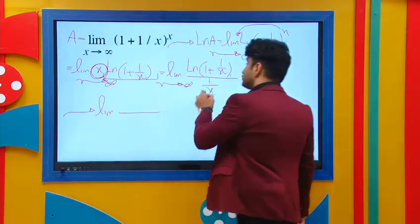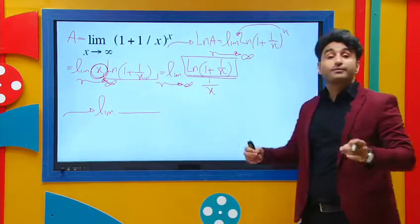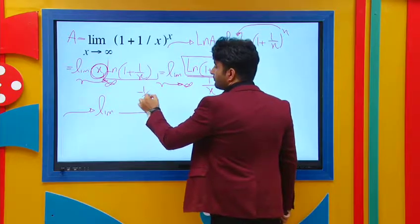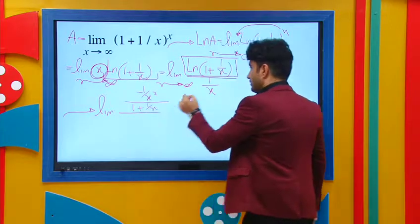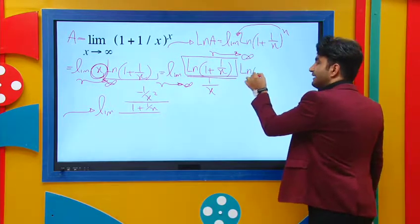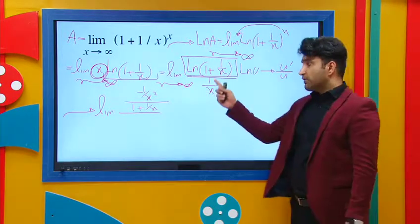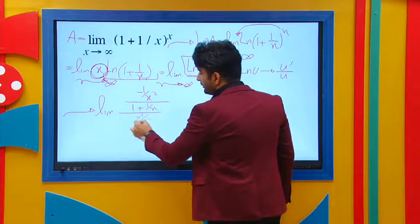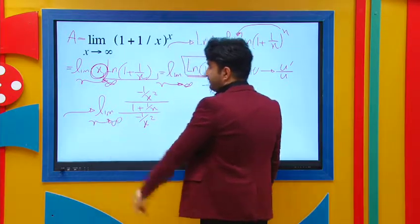The derivative of top: the derivative of natural log gives me -1/x² over (1 + 1/x). You know the derivative of ln u is u' over u, and the derivative of 1/x equals -1/x² as x approaches infinity.